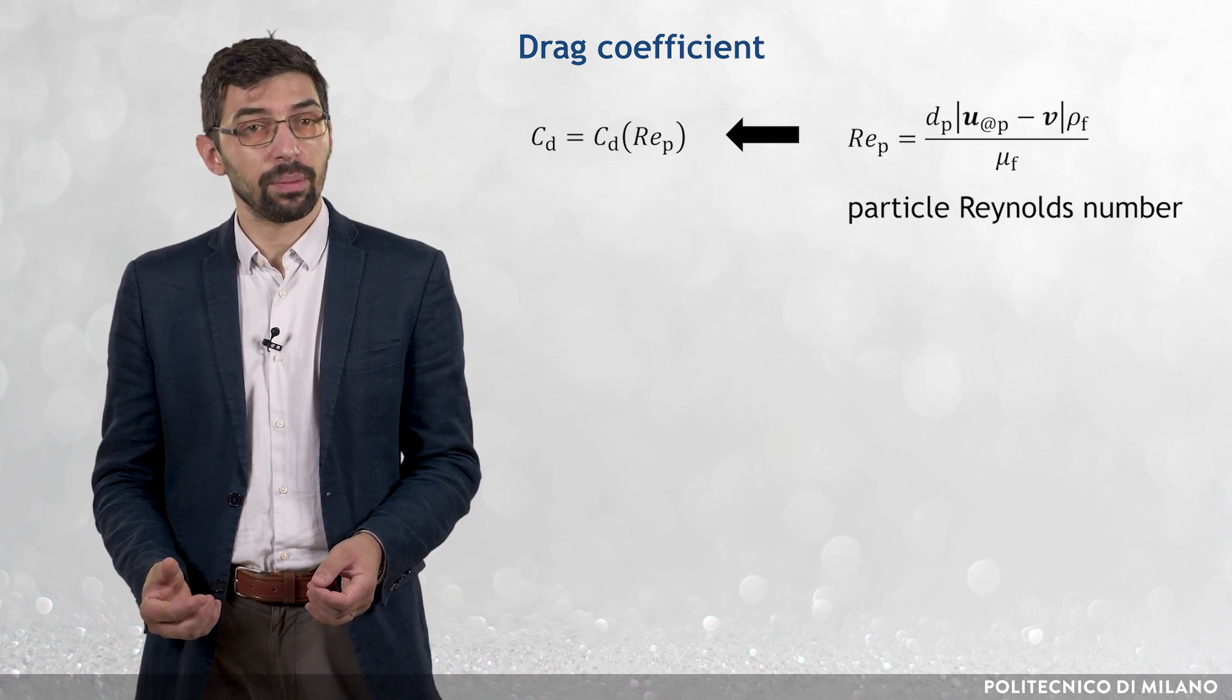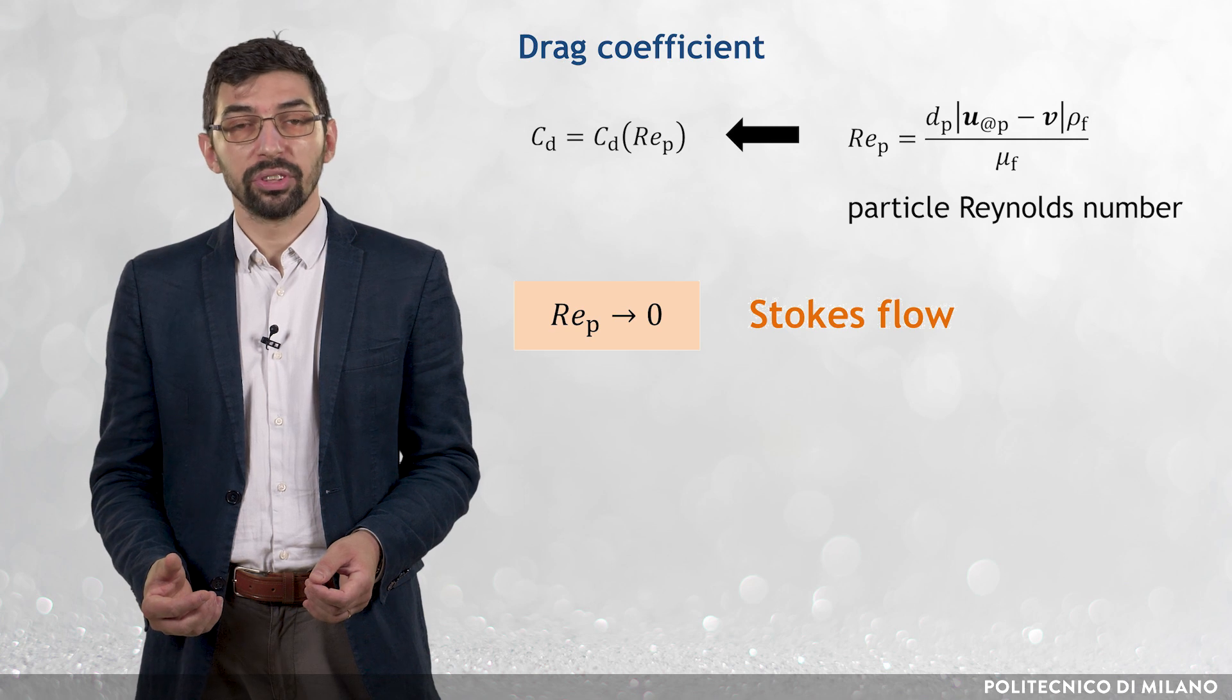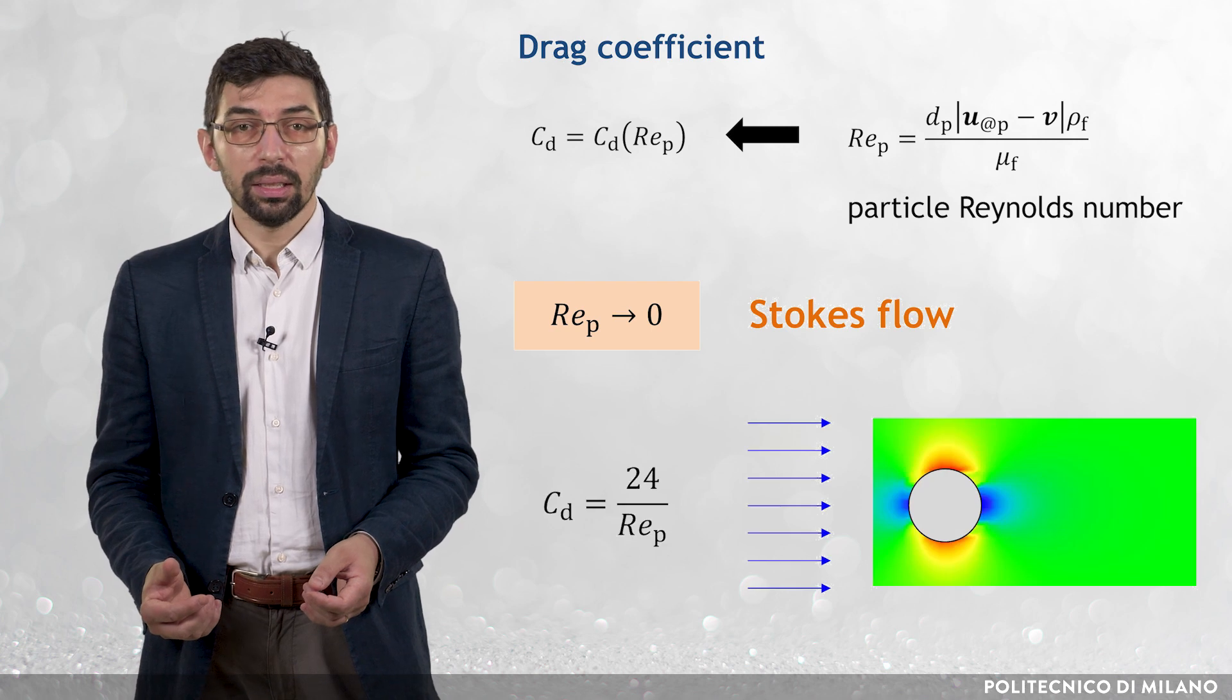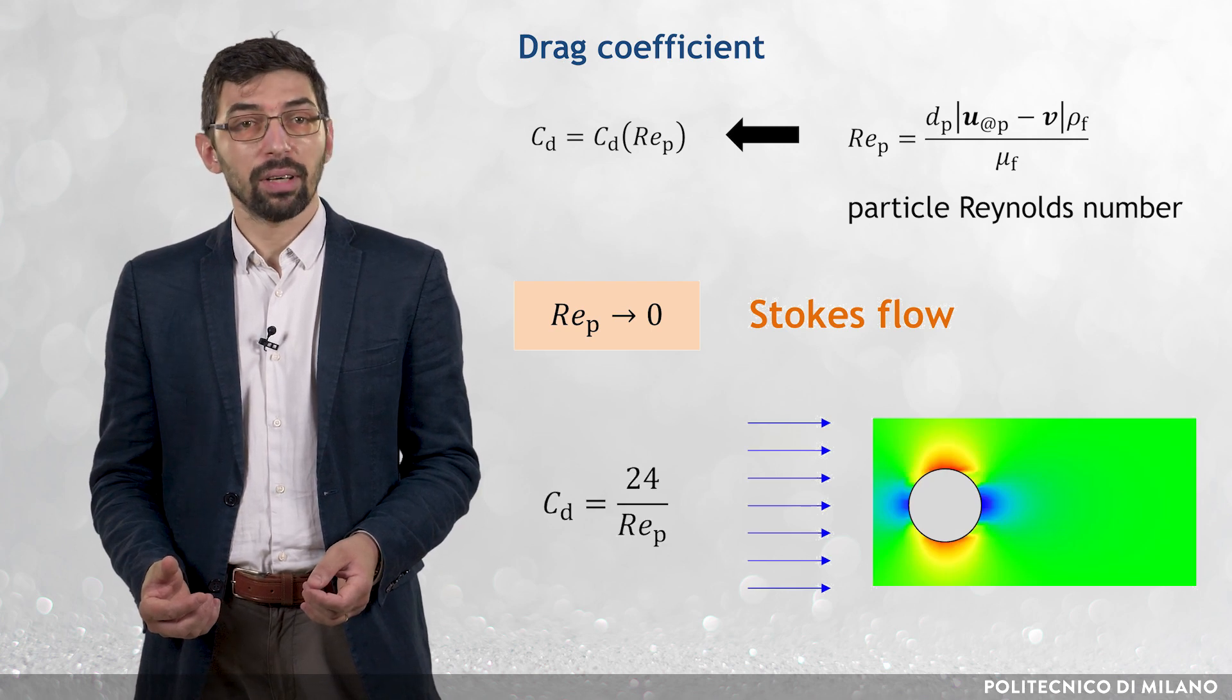When Rep tends to zero, Stokes flow occurs and, as already seen, Cd is equal to 24 divided by Rep.